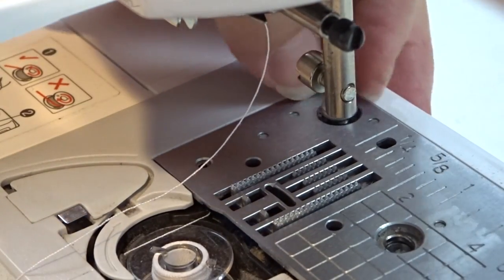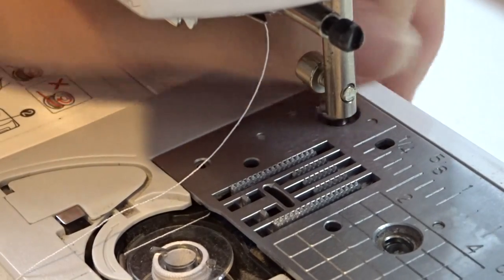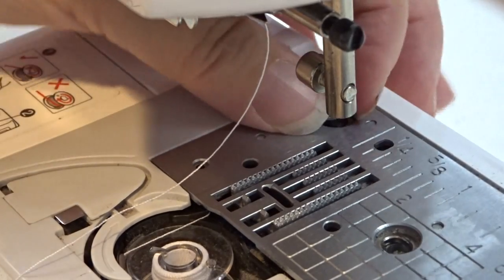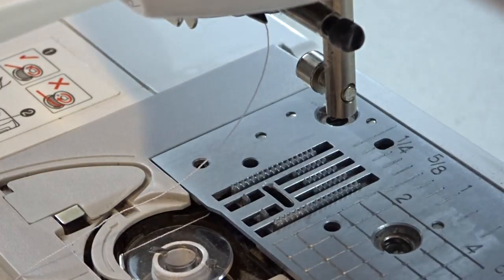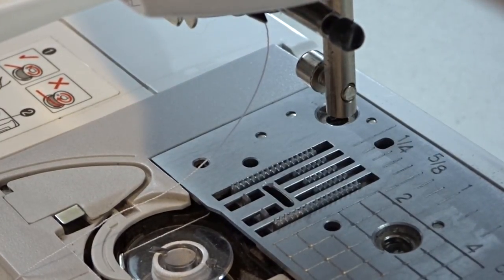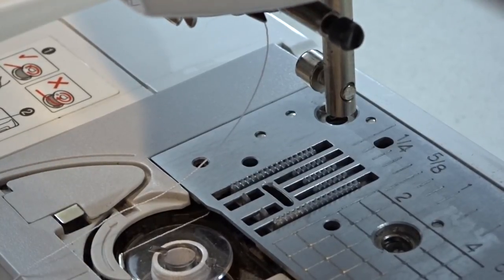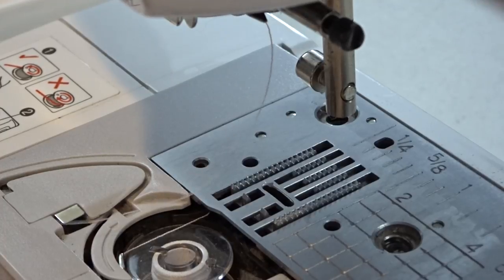We're just going to take this other screw out. At any time, check your owner's manual, your user's manual. If you don't have one, I'm sure you can look online to the manufacturer, or you could always just pop into a local quilt shop and ask them to show you how to take this apart.